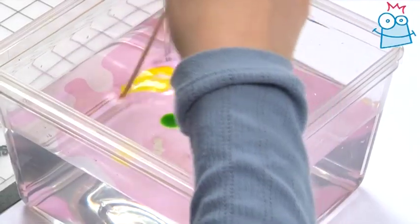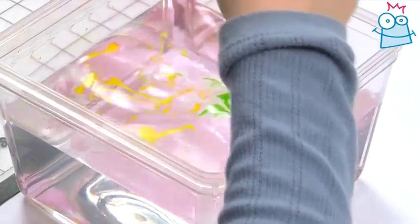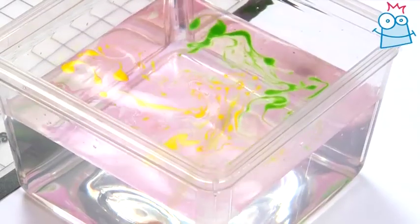Once the ink is in, swirl it around with a wooden stick or you can blow on the surface through a straw to create a pattern.